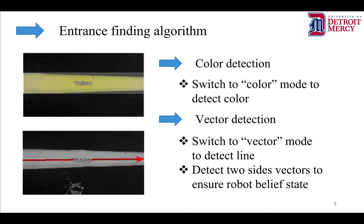For the entrance finding algorithm, we perform color detection and vector detection. The robot must find the entrance — the road has two yellow lines, so first the robot finds the yellow color. Then it determines whether that yellow color forms a vector, meaning it is a road. If it is not a vector, it is not a road. We must find two vectors because there are two lines on the road, which ensures the robot's belief state for the entrance.